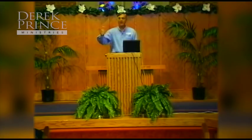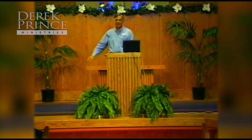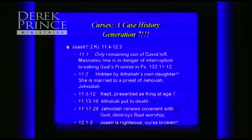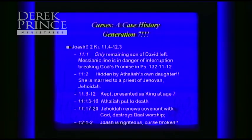Athaliah heard the celebration with the king's trumpets being blown and came screaming into the temple, crying out 'treason, treason.' They said, 'Take her outside and kill her.' That unleashed the reign of Joash, who instituted wonderful reforms on spiritual and government issues. And there you have a pretty good example of a seven-generation curse — with God's intervention breaking the cycle at the seventh generation.